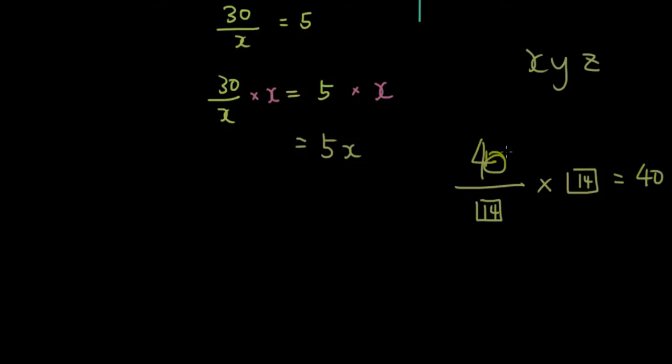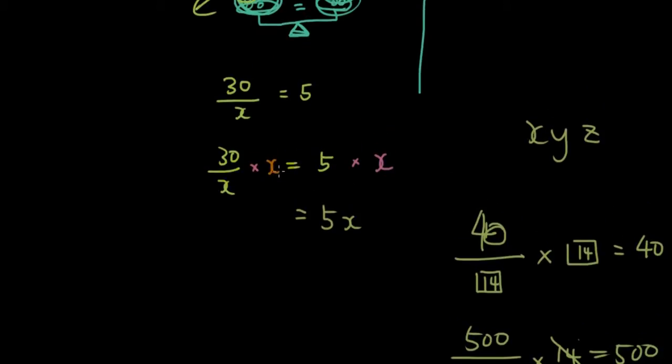Whatever number you put here. So let's say I put 500 divided by 14 times 14. You're going to get 500. So what that means is if you divide by something and then multiply it by that same thing again, the effects will cancel each other out. So that's what's happened here. We multiply by x here. So divided by x and times by x cancel each other out.